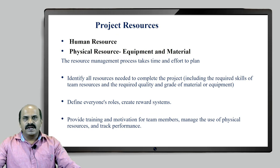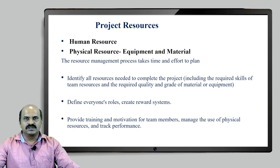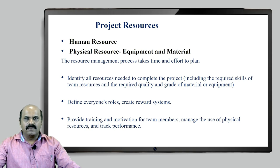Now we are moving toward the next topic of this unit: project resources. After identifying the stakeholders, the requirements, the time, scope, and everything about the project, we need to check what type of human resource or physical resource is required for the project to start its execution. The resource may be a human resource or a physical resource, which may be equipment or material.